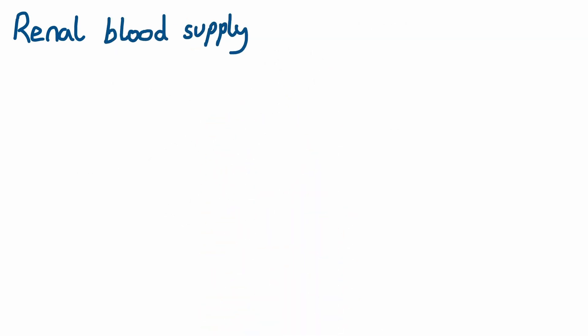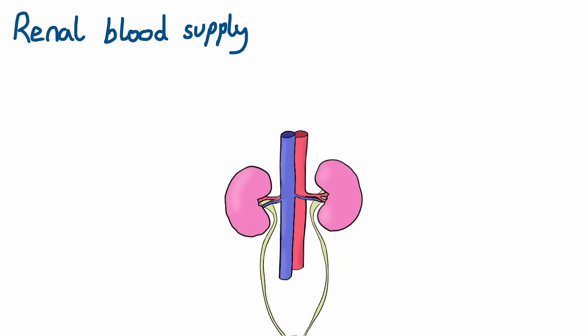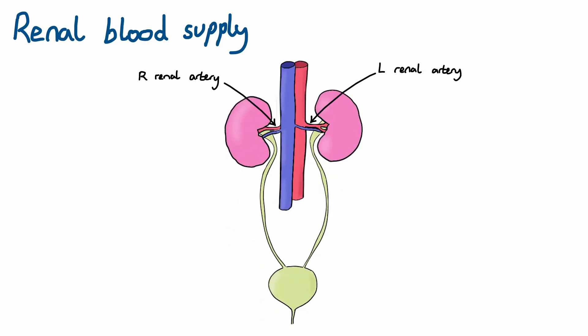The blood supply to the kidneys comes from the two renal arteries, one supplying each kidney. The renal arteries are direct branches of the abdominal aorta. Since the abdominal aorta lies slightly left in the midline, the left renal artery is shorter than the right, where the right has to cross the inferior vena cava posteriorly.